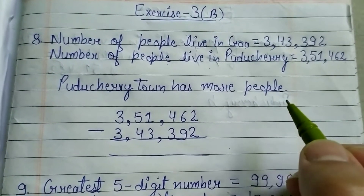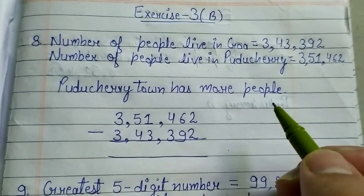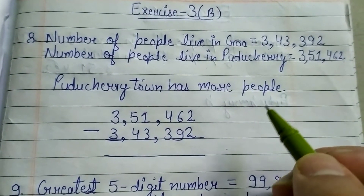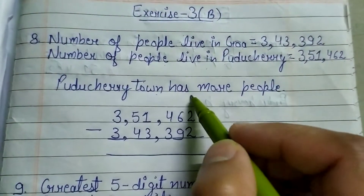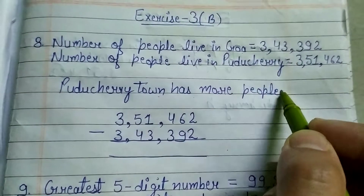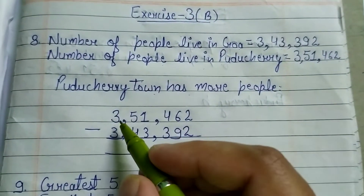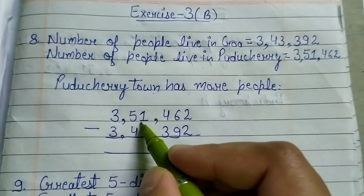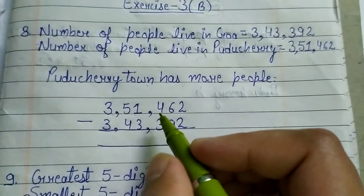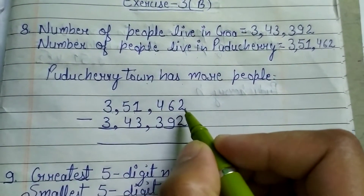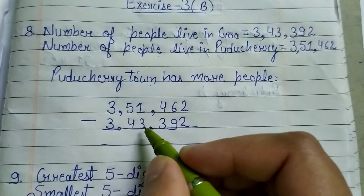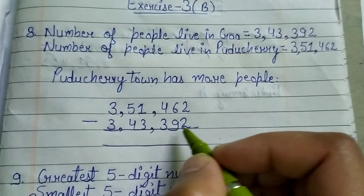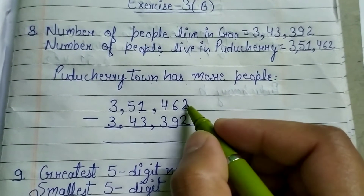First question: which town has more people? Kunducherry town has more people. And by how much? Firstly write 3,51,462, subtract 3,43,392.